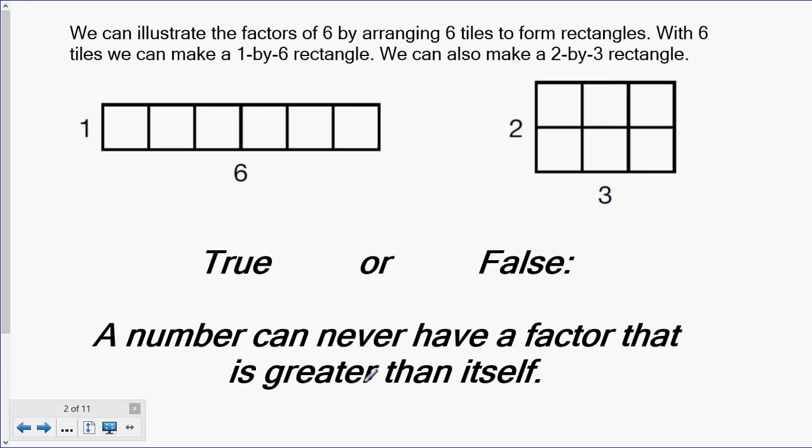We can illustrate the factors of 6 by arranging 6 tiles to form different shaped rectangles. With 6 tiles, we can make a 1 by 6 rectangle and we can make a 2 by 3 rectangle. This is a way of showing the factors of 6, because when we get the area of a rectangle, we do length times width.